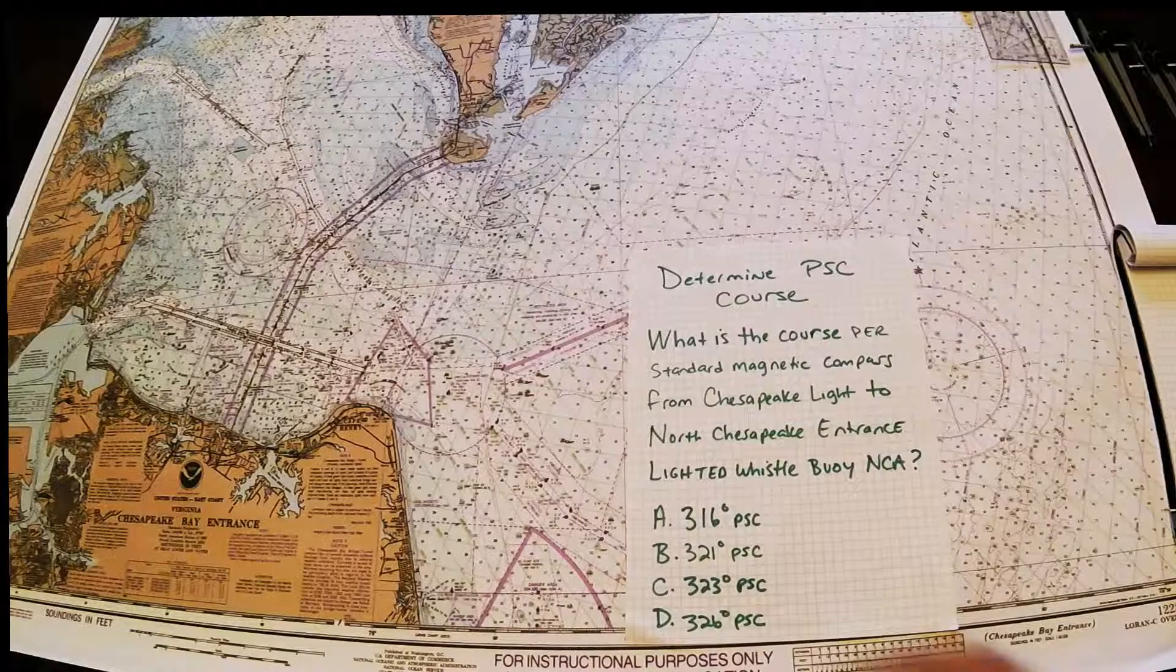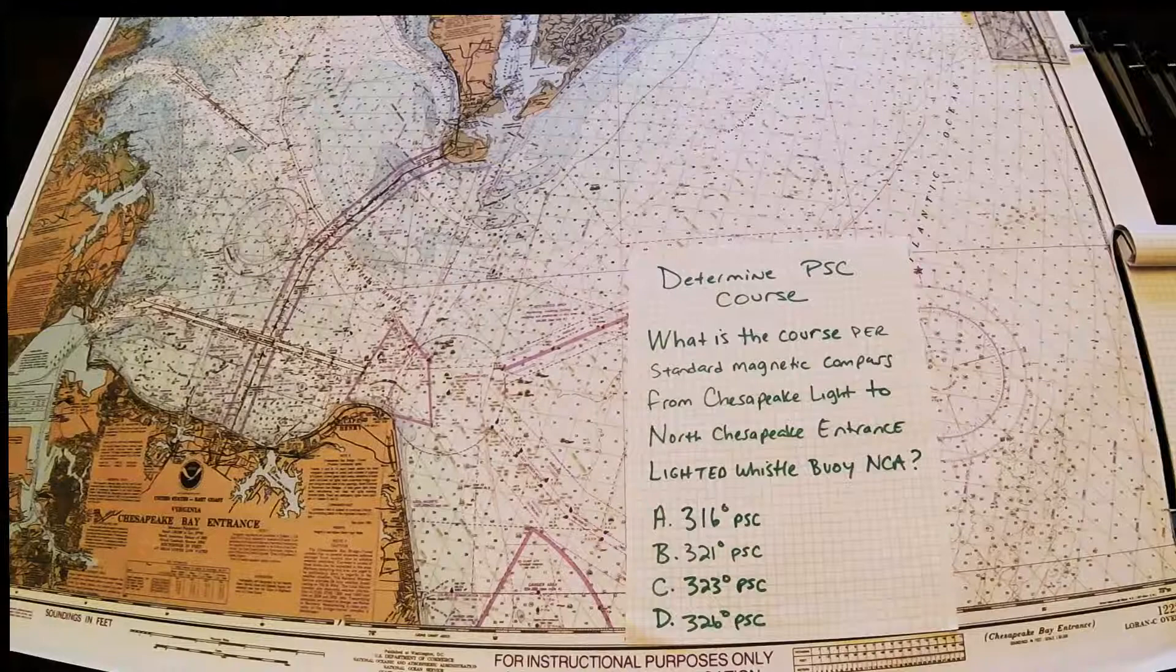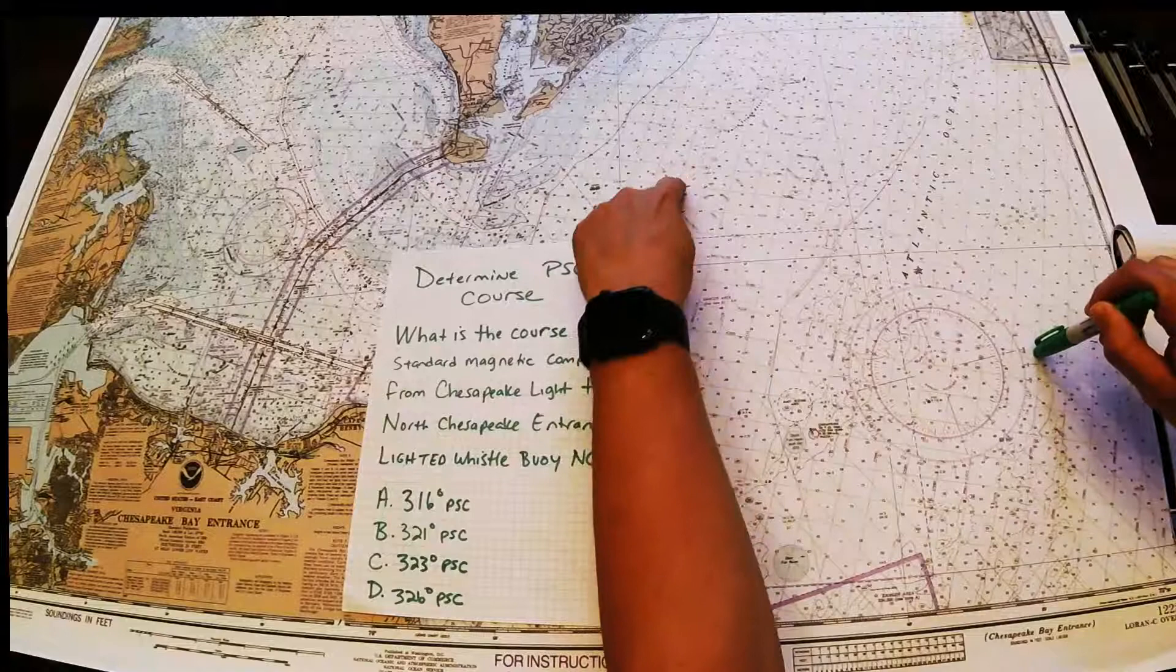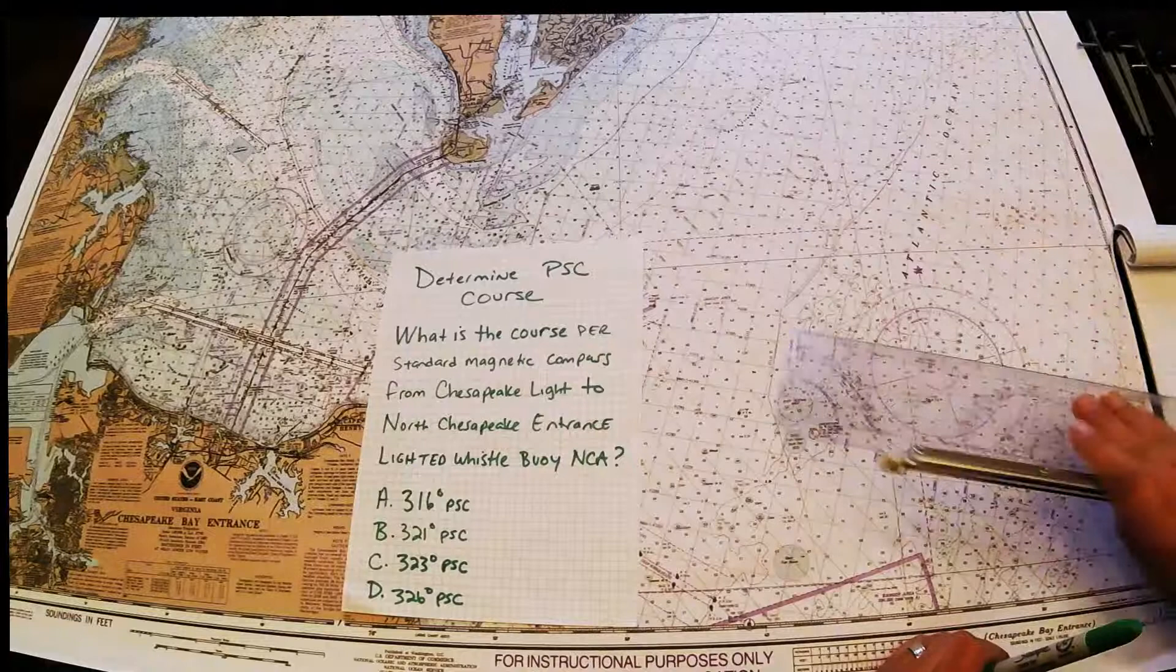In this problem, you're either going to be given two geographic points like we have here, or two latitude and longitudes that will be randomly selected. Whatever they state, you're going to plot those points and you're going to use your parallel ruler to line them up and get the true.